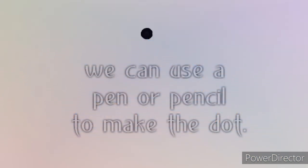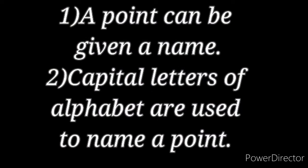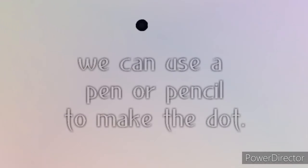We can use a pen or pencil to make the dot on a paper sheet. Capital letters of the alphabet are used to name a point. For example, we use a pen and make a dot on paper — the figure we get is called a point.